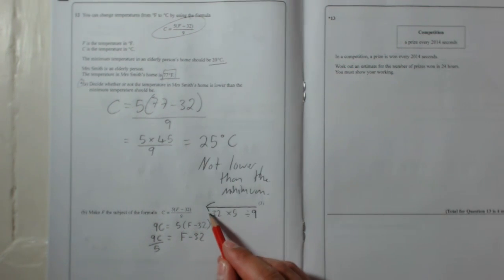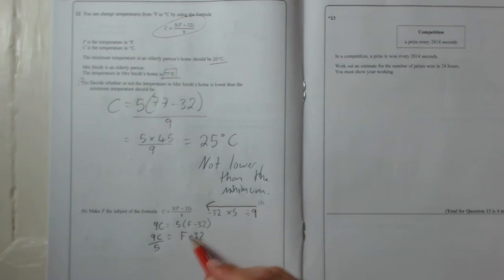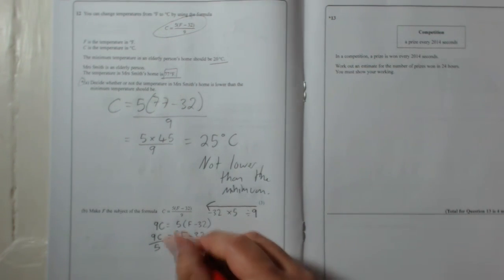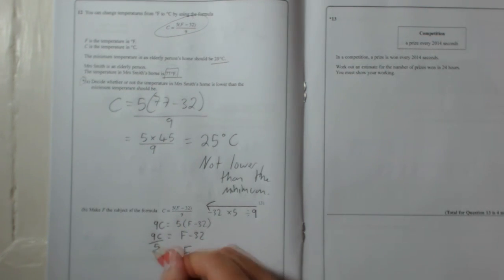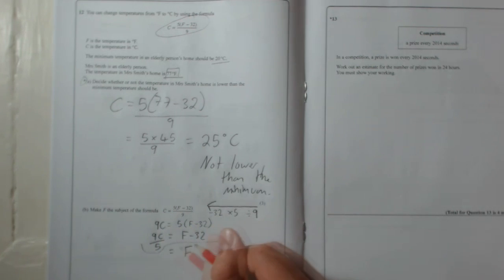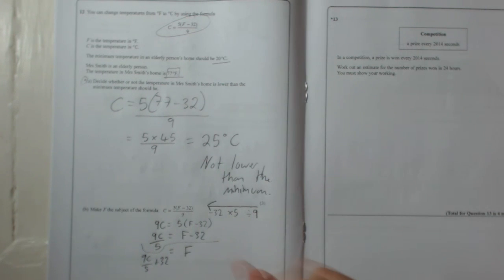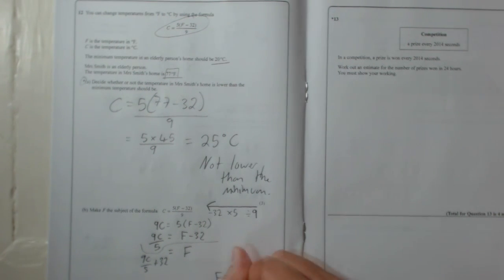Now then, we're going to undo the minus 32. So to get rid of a minus 32, you're going to add 32. So that will get rid of the minus 32. And then we're going to add 32 to this. So, sorry, it's a bit close. Let's do that. So that would be 9C over 5 add 32 equals F. So I'll write it properly here. F equals 9C over 5 add 32. Done.